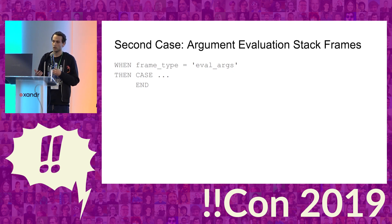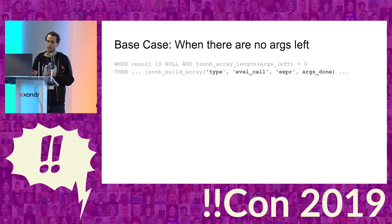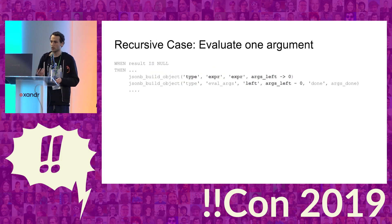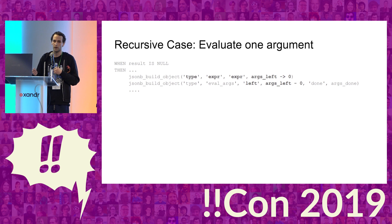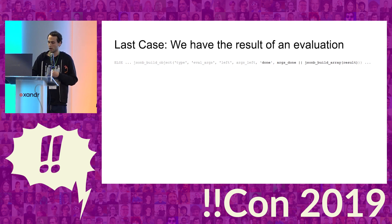The second kind of frame is eval_args frames, with a few different cases. The base case: if the list of arguments left to evaluate is empty, we push an eval_call frame with the arguments we've already evaluated. For the recursive case, when there are still arguments left, we take the first argument from the list, remove it, and push an expression stack frame to evaluate it. Once we get the result back, we add that argument to the done array. This evaluates all arguments and then pushes an eval_call frame with the evaluated arguments.